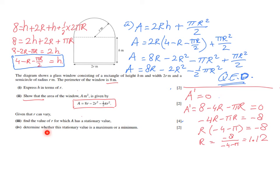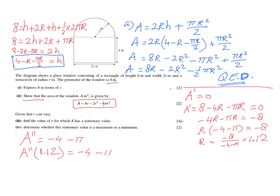The last part asks whether this stationary value is a maximum or a minimum. I use the second derivative test. The second derivative A'' is the derivative of (8 − 4r − πr), which gives −4 − π. There is no r variable remaining, so this value is constant. Since −4 − π is negative, A'' < 0 for all values of r.